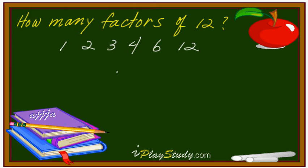That means totally how many? 6 of them. That's right, we have 6 factors of 12. Okay, wait a minute — any shortcut or trick? I have a trick. Let's talk about that one.